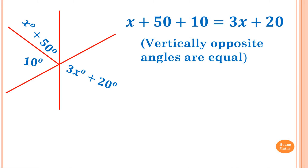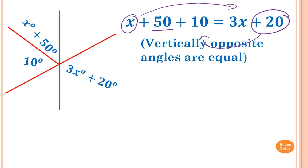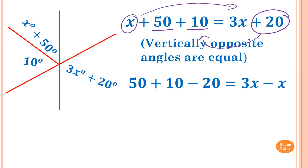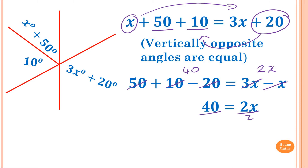Collecting like terms and moving letters to one side and numbers to the other: 50 plus 10 minus 20 equals 3X minus X. So 60 minus 20 is 40, and 3X minus X is 2X. So 2X equals 40. Dividing both sides by 2, X is equal to 20.